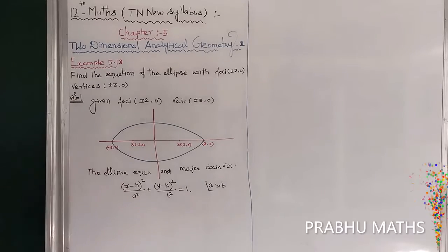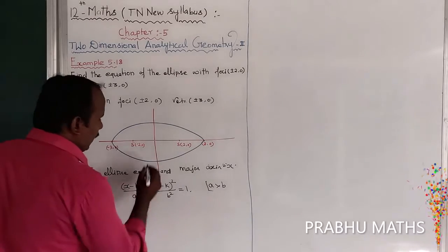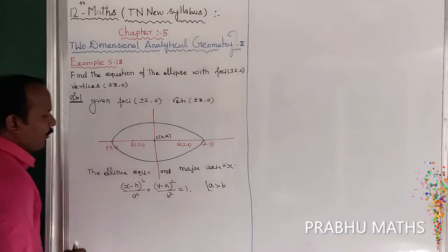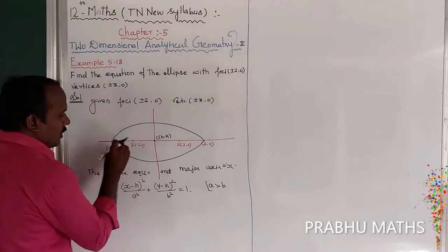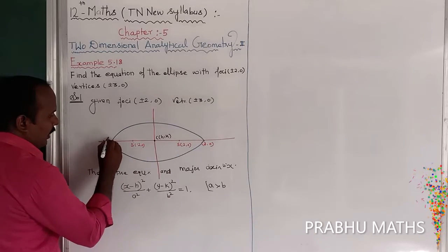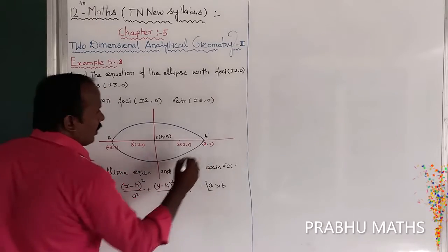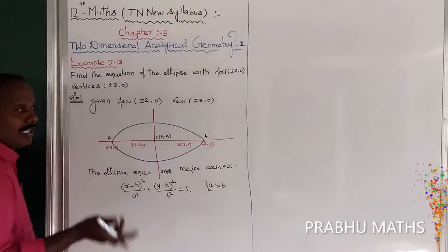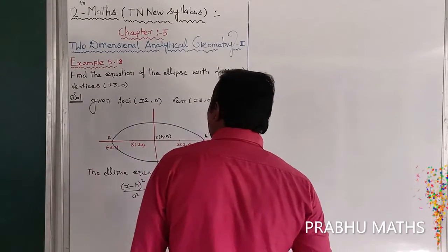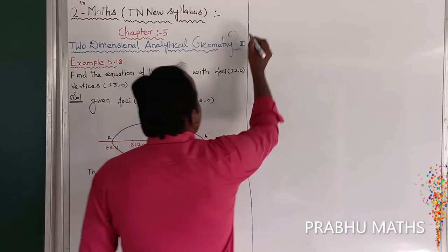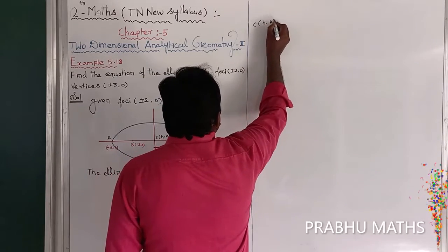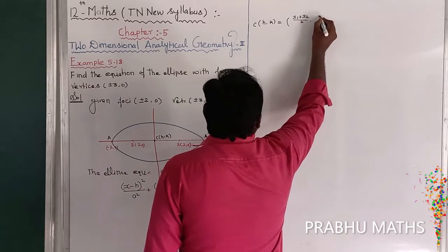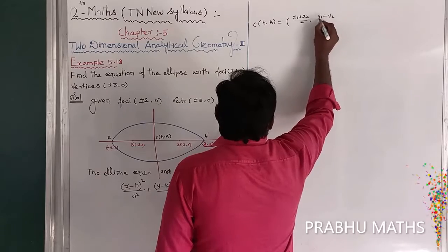First, find h and k, which represent the center. The center C(h, k) is found using the midpoint formula: x1 + x2 / 2 and y1 + y2 / 2. Label the coordinates x1, y1, x2, y2.